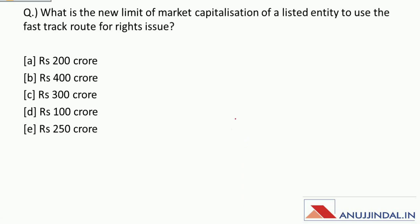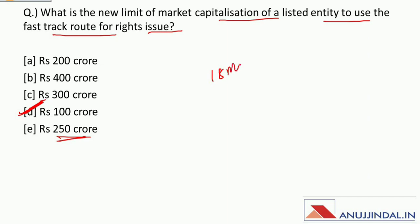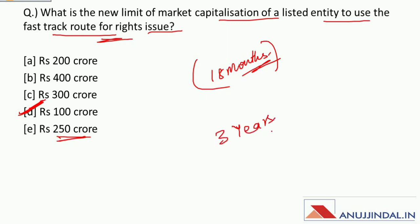What is the new limit of market capitalization of a listed entity to use the fast track route for rights issue? This limit was earlier Rs. 250 crore; now it has been decreased to Rs. 100 crore. Additionally, if a company has been listed for 18 months, it can also use the fast track route for rights issues. Earlier this listing period requirement was 3 years; now it has been reduced to 18 months.